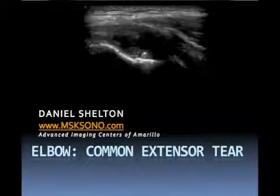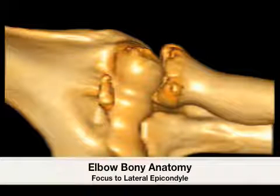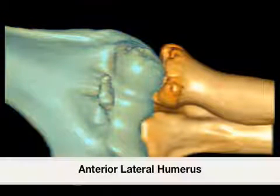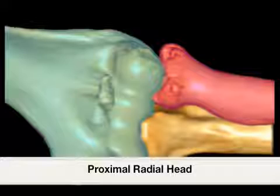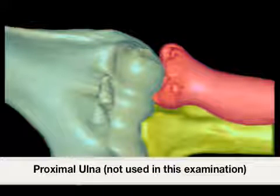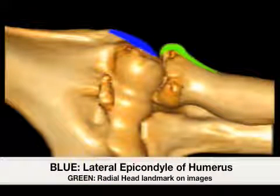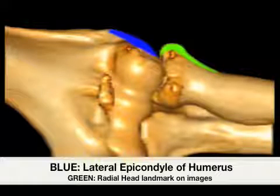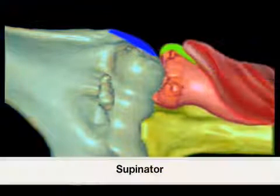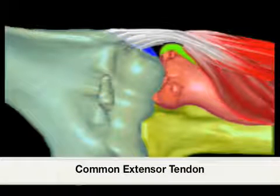This video describes pathology to the lateral elbow, specifically at the common extensor tendon. The bony anatomy review includes the anterior surface of the humerus, the anterior lateral surface of the radial head, and the anterior surface of the ulna. Highlighted in blue is the common extensor tendon with its insertion to the lateral epicondyle, and in green is the radial head. Over the radial neck is the supinator muscle, over which lies the common extensor tendon.